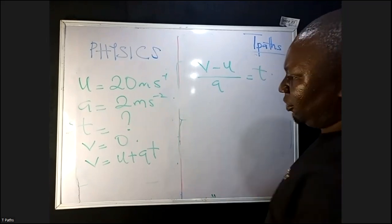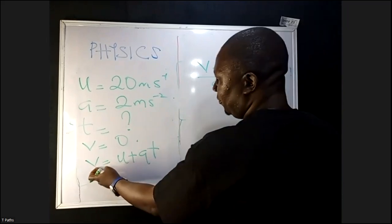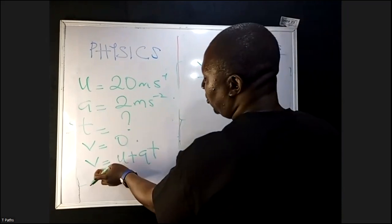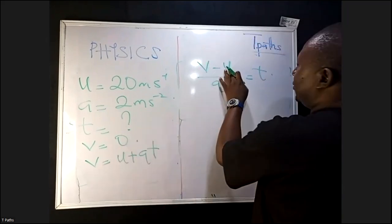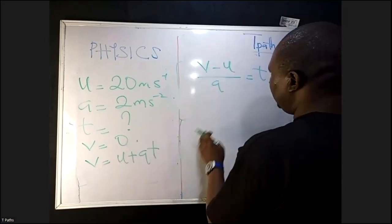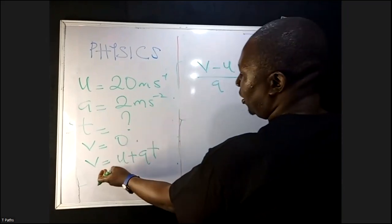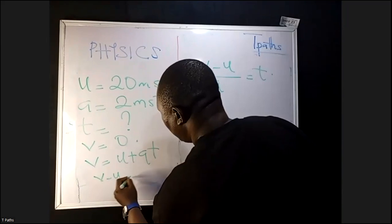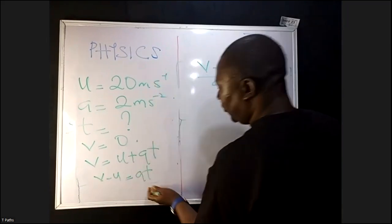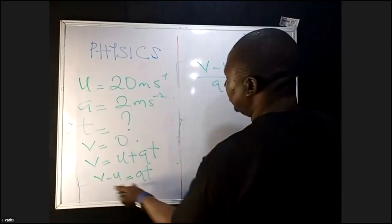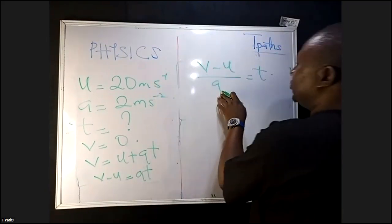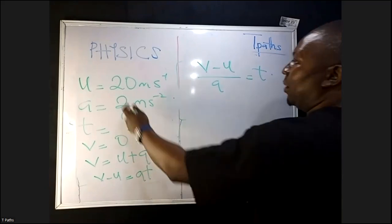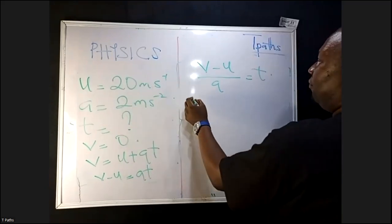Because V = U + AT. When U comes to the other side it becomes minus, giving V − U = AT. Dividing both sides by A gives T = (V − U) / A.